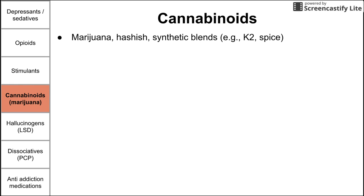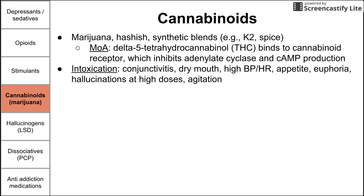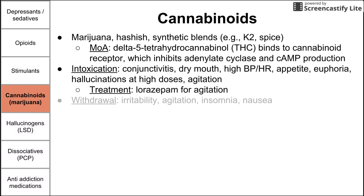Cannabinoids — we're pretty much talking about marijuana, plus hashish and synthetic blends like K2 and spice. The mechanism of action is that THC, the active ingredient, binds to the cannabinoid receptor, which inhibits adenylate cyclase and cAMP production. Intoxication presents with conjunctivitis (the red eyes), dry mouth, high blood pressure, high heart rate, increased appetite, euphoria, hallucinations at high doses, and agitation. Conjunctivitis is probably the big differentiating symptom for cannabinoids. Treatment is supportive — lorazepam for agitation.